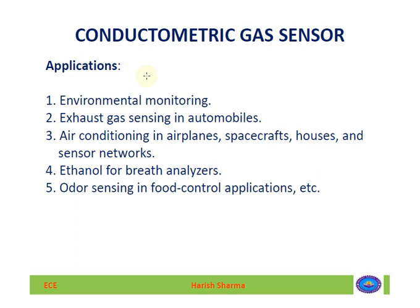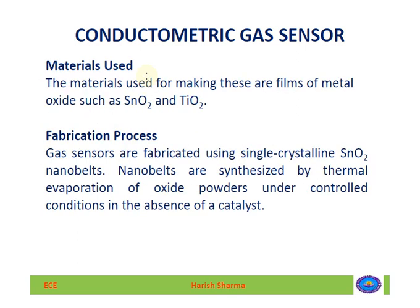If the process is oxidizing, the gas will extract electrons from the semiconductor material, reducing the number of electrons. If it is a reducing process, the gas will inject electrons into the semiconductor material, thereby changing the conductivity of the material.